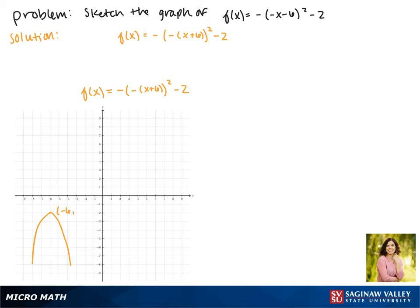Our vertex is at the point negative six negative two, and this is the graph of our function.